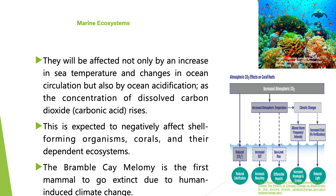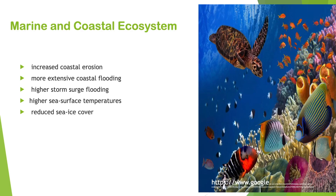The Bramble Cay Melomys is the first mammal to go extinct due to human-induced climate change. Impacts of climate change on marine and coastal ecosystems include: increased coastal erosion, more intensive coastal flooding, higher storm surge flooding, higher sea surface temperatures, and reduced sea ice cover.